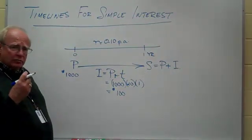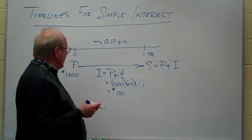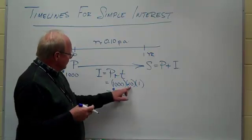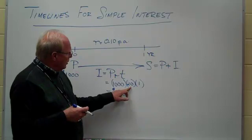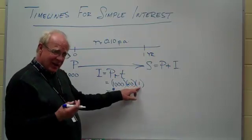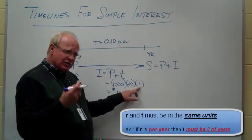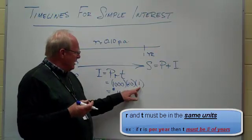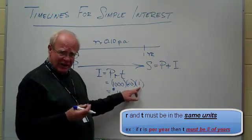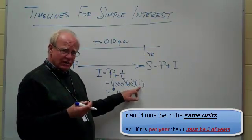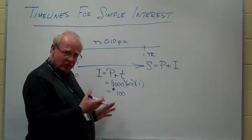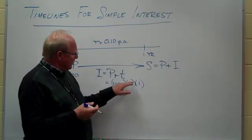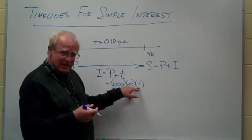There are two things that should be of particular note here. And they are that the interest rate here is quoted per annum, per year. So the time has to be in the same units. In the hard sciences, like physics and chemistry, we call this dimensional analysis. And we have to also use that in our formulas in business to make sure everything really is going to work out to be dollars in this case. So this is per annum, this has to be years.